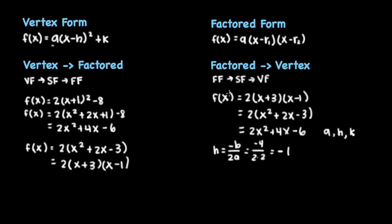If we plug this -1 back into this original equation, we will get our k value. So f(-1) = 2(-1 + 3)(-1 - 1) = 2(2)(-2), and k = -8.